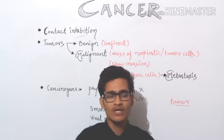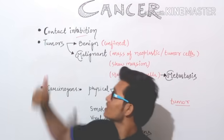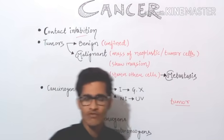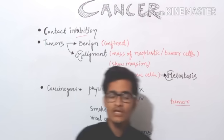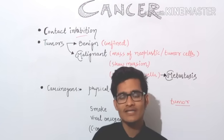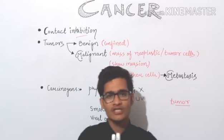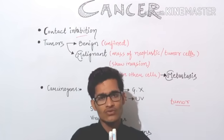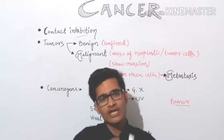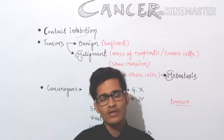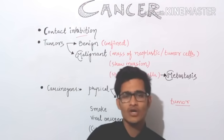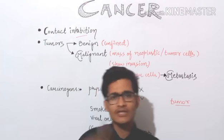This particular thing is known as contact inhibition, and it is very necessary in the case of normal cells. But in the case of cancerous cells, there is no contact inhibition — there is no signal that you have grown enough. So they keep on growing and keep on dividing because of the lack of contact inhibition.